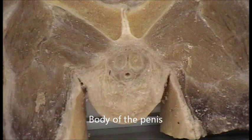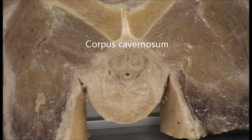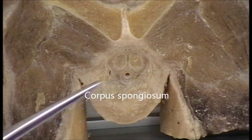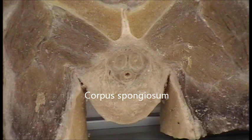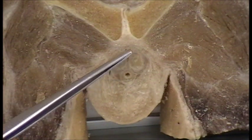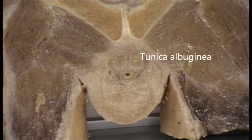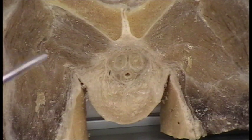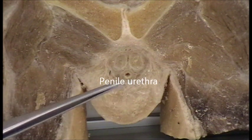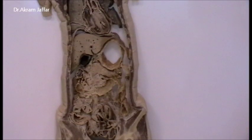Below the symphysis pubis in the body of the penis you can see the three cylinders of erectile tissue. The two dorsal cylinders are the corpora cavernosa, and the ventral cylinder is the corpus spongiosum. The corpora cavernosa are surrounded by a thick whitish fibrous membrane called the tunica albuginea. The corpus spongiosum, located ventrally, is traversed by the penile urethra.